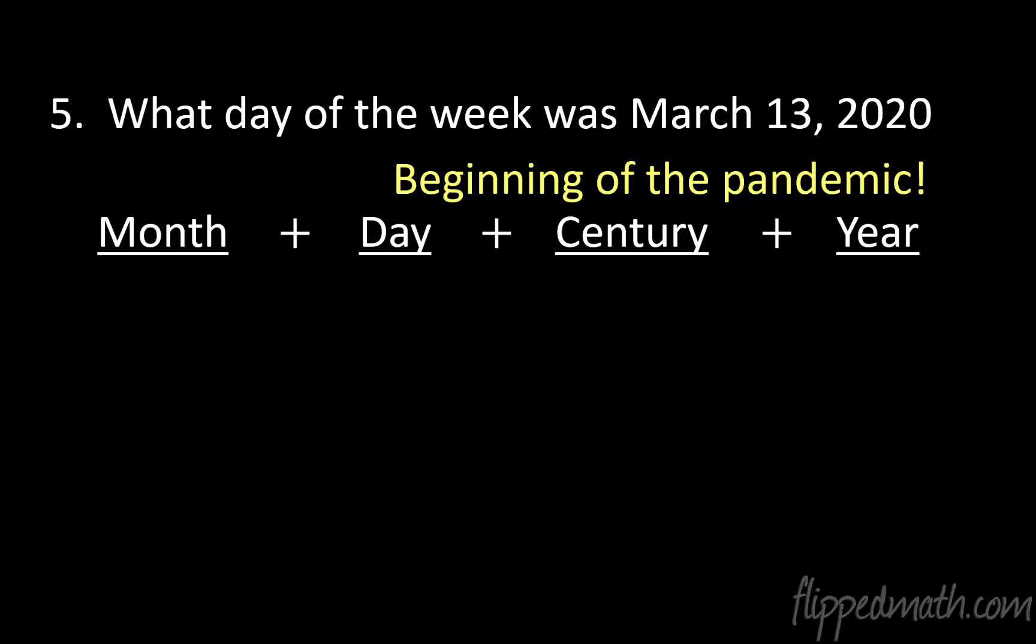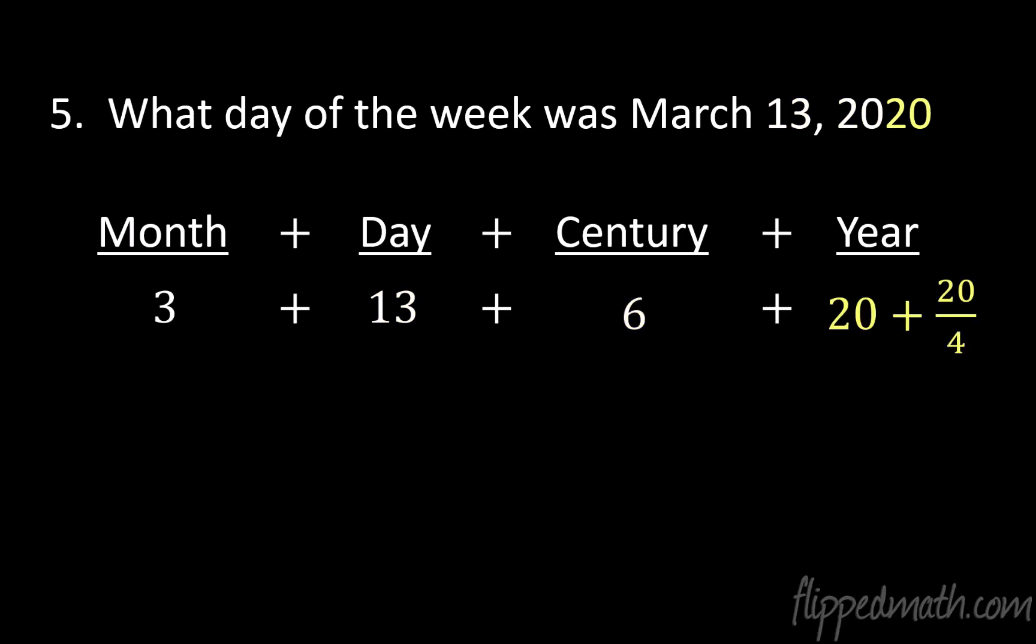So what about the month? The month is a March. March happens to be the third month. That's a value of 3. Okay. The day is a 13. The century is a 6 because it's the 2000s. And then the year is 20 plus 20 over 4. So now watch what I'm going to do here. I'm going to combine 3, 13, and 6. If I add those up, 3, 13, and 6, I get 22.